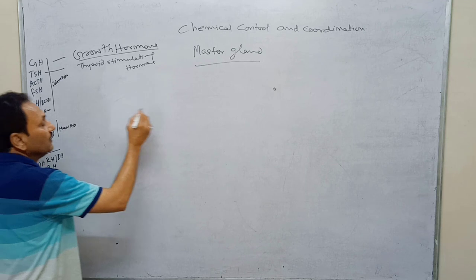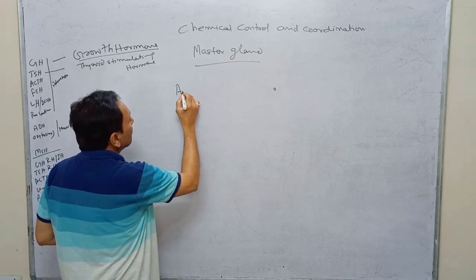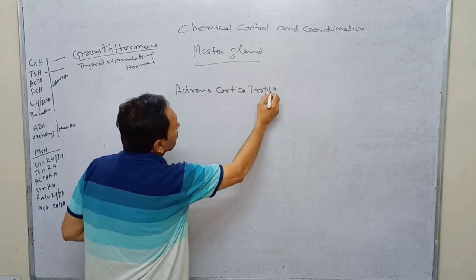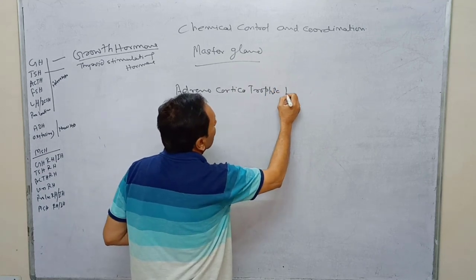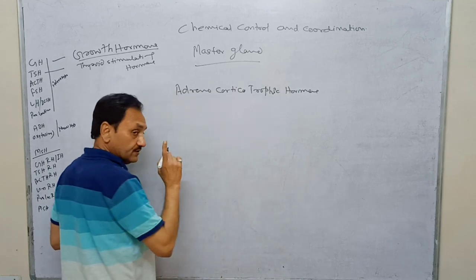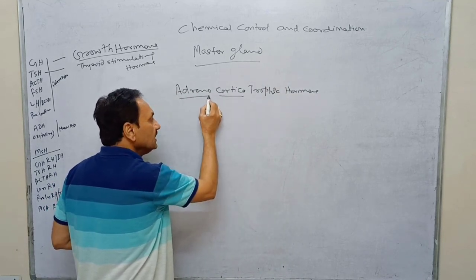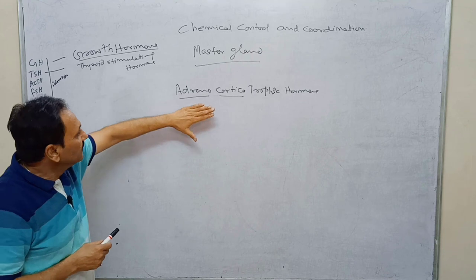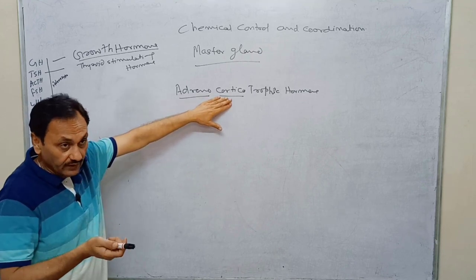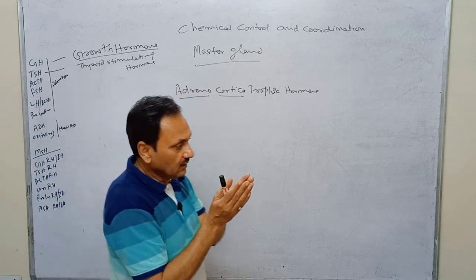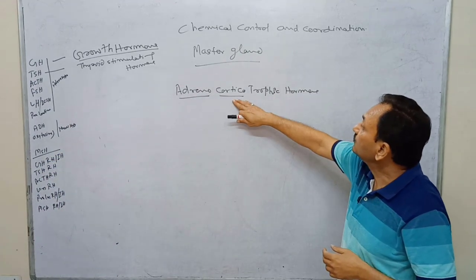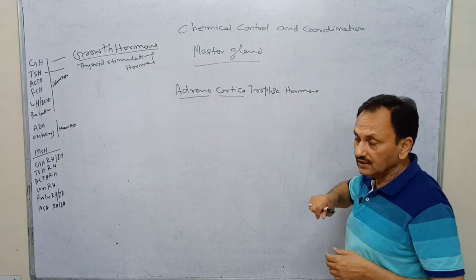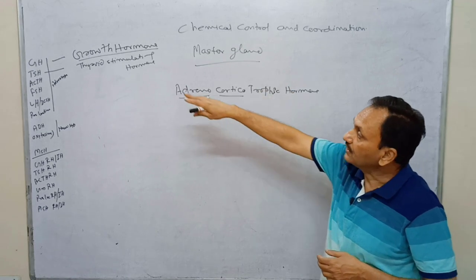The next hormone is the adrenocorticotrophic hormone, or ACTH. The cortex region of the adrenal gland releases corticoids, and the quantity of corticoids released from the adrenal is under the control of ACTH. So the adrenal cortex is also under the control of the pituitary, making the pituitary the master gland for the adrenal gland as well.